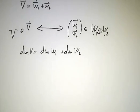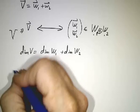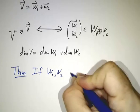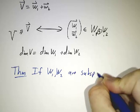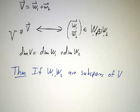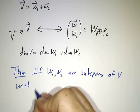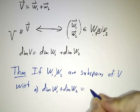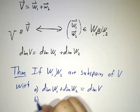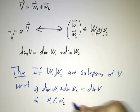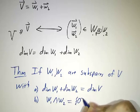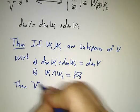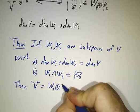And in fact, here's a theorem about internal direct sums. If W1 and W2 are subspaces of V with two properties: the first is that their dimensions add up to the dimension of V, and the second is that the only place that they intersect is at the origin, then V is the internal direct sum of W1 and W2.